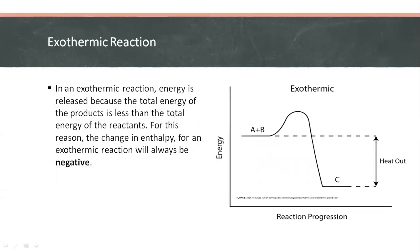In an exothermic reaction, energy is released because the total energy of the products is less than the total energy of the reactants. For this reason, the change in enthalpy for an exothermic reaction will always be negative.